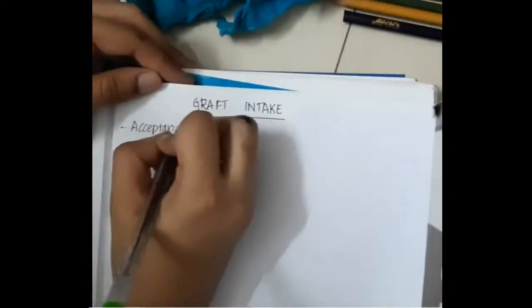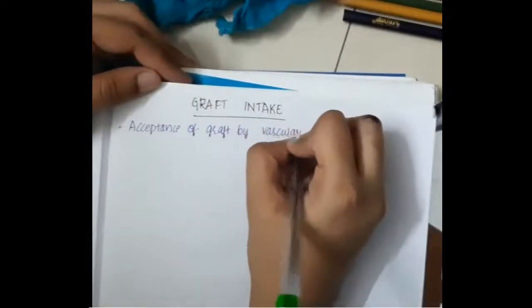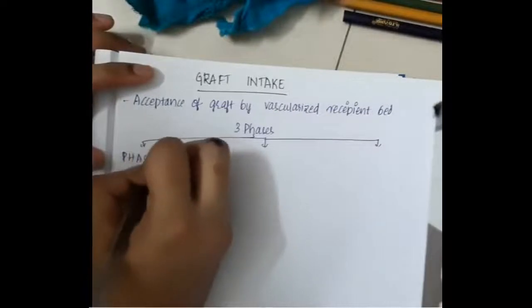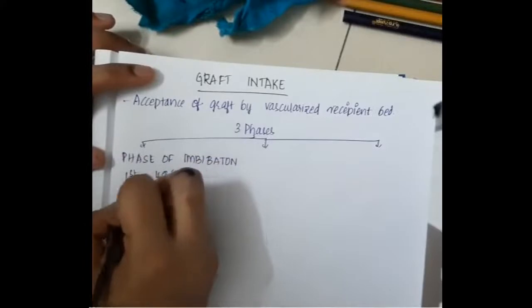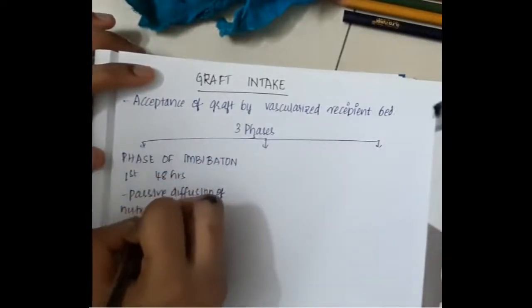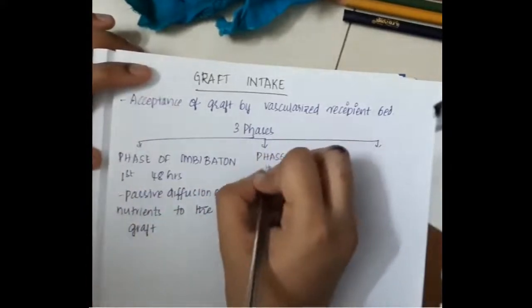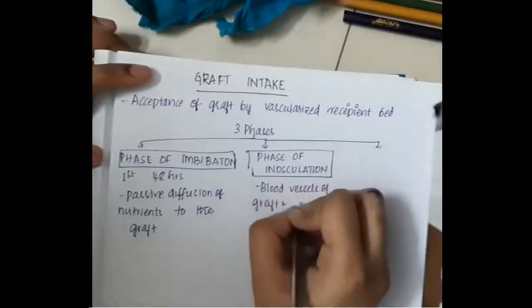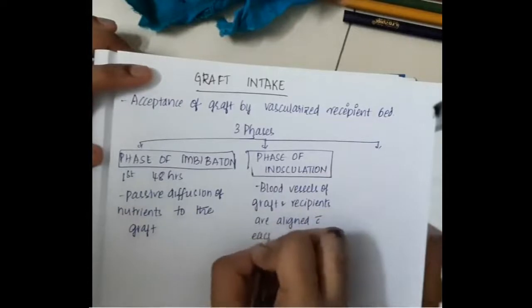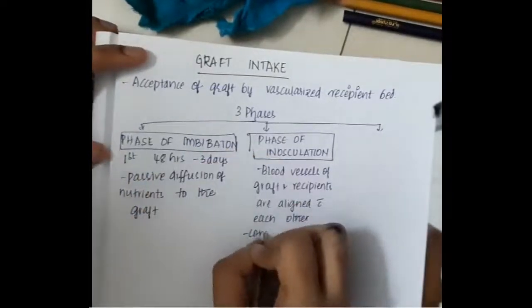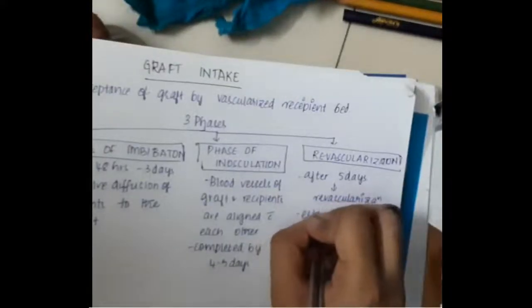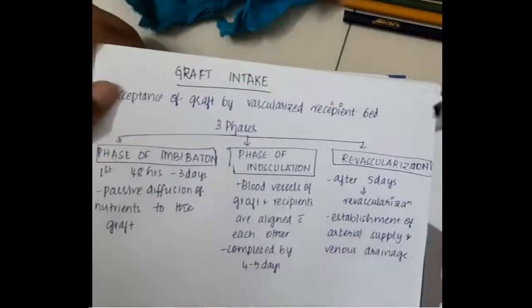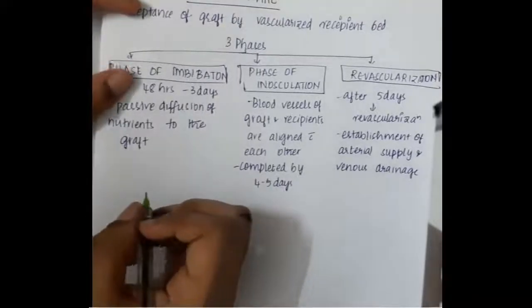Now let us learn about graft intake. Graft intake is the acceptance of a graft by a vascularized recipient bed. There are three phases: Phase one is imbibition, which starts from the first 48 hours to 3 days, where passive diffusion of nutrients occurs inside the graft. Phase two is inosculation, where the blood vessels of the graft and recipient align with each other, completed within 4 to 5 days. Phase three is revascularization, which occurs after 5 days, with establishment of arterial supply and venous drainage.